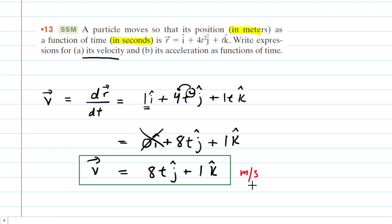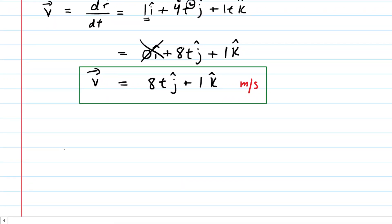In part B, we need to find the acceleration vector. And this is a very similar exercise, because the acceleration vector is going to be the derivative of the velocity vector with respect to time. So we just have to do this again, take the derivative of each component. So for the derivative of 8t, we would just have 8, and that would be j-hat. And then here we have the derivative of a constant 1, which again is just 0, and that's k-hat.